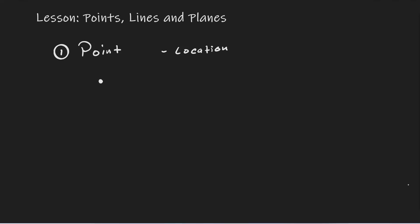We need to discuss how we're going to be naming points. So how exactly do we name points? We use capital letters. If we go back to this illustration of a dot, if I put a capital letter A right next to it, then I can say that this point is called A. We can refer to this as point A.